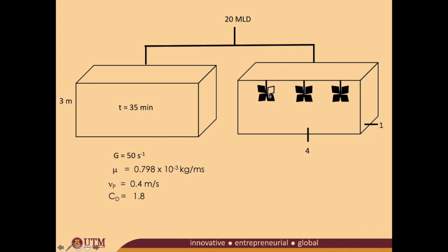The flocculation tank has three pedals — one, two, and three — and each pedal has four plates. As you can see from my diagram here, each pedal has one, two, three, four plates. So they have an equal number of plates for each pedal.